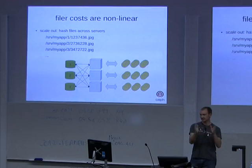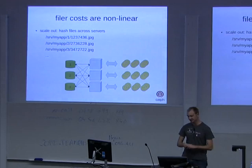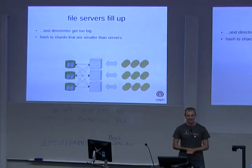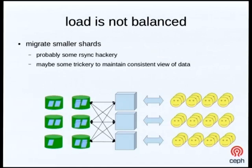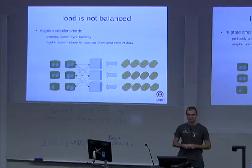Everything's fine. Your site continues to grow until you start dealing with problems from just managing all these machines. Your file servers start to fill up, your directories get really big — that might be a problem just for administrators doing ls -l, or file systems that don't handle large directories, although that tends not to be the case these days. The usual approach is to hash across shards — smaller directories — with lots of shards stored on each server. When you add new back-end storage servers, you can migrate chunks of your dataset independently. You're probably using some combination of rsync and scp, maybe taking the site down for a few minutes and hoping nobody notices.